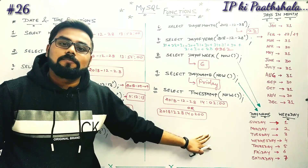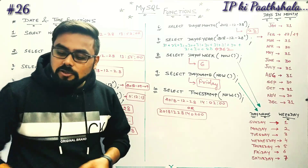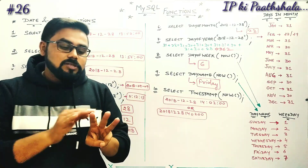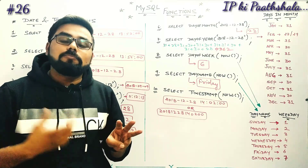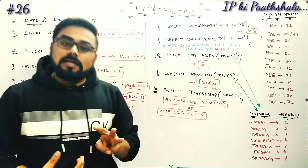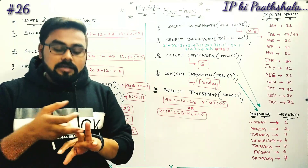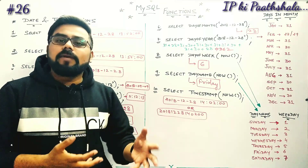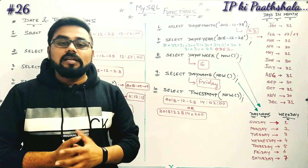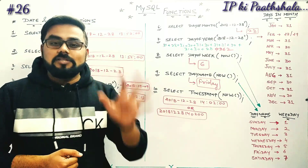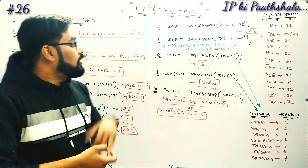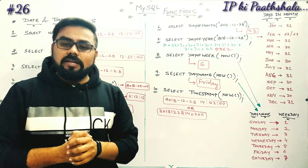These were our last functions. Let me quickly summarize the whole video. First we discussed NOW(), SYSDATE(), and CURRENT_DATE() functions whose answers are dependent on your system — whatever date and time your system has, those answers will come. In NOW(), answers come from the taskbar app. SYSDATE() answers come from the system. CURRENT_DATE() gives today's date. Then we covered DATE() and TIME() functions — with a random input, date or time is extracted; with NOW() or SYSDATE(), today's date or time is returned.